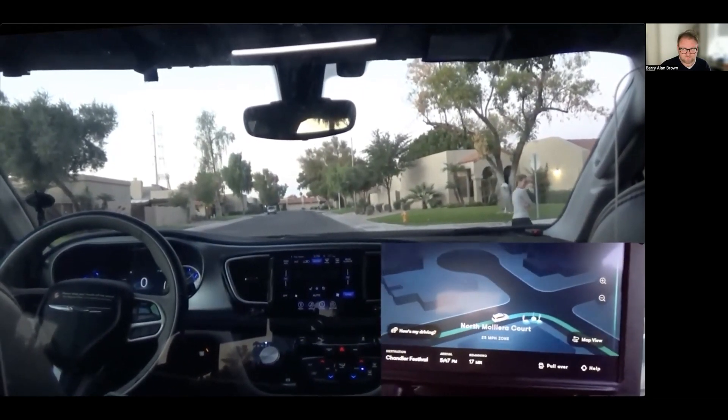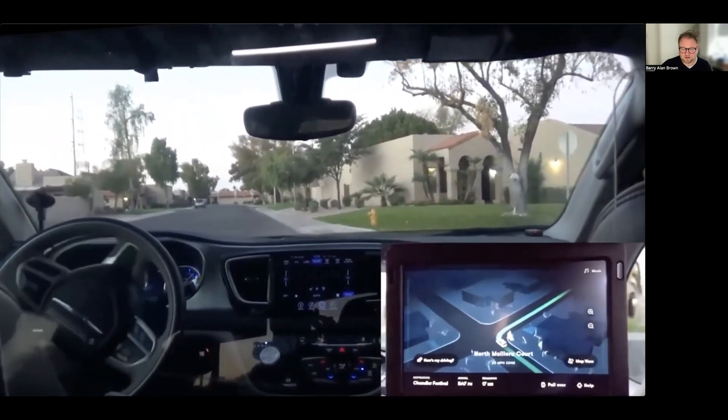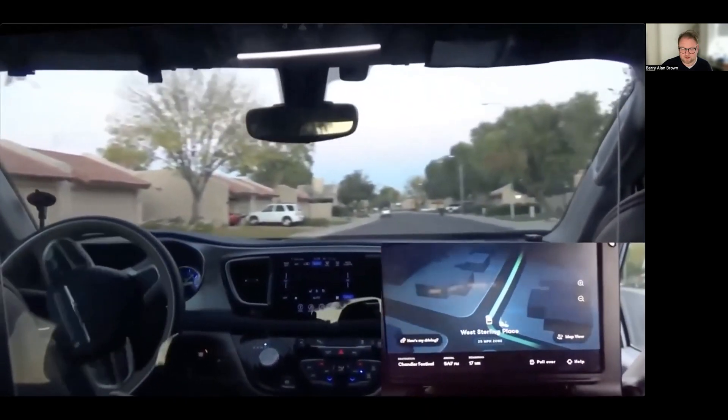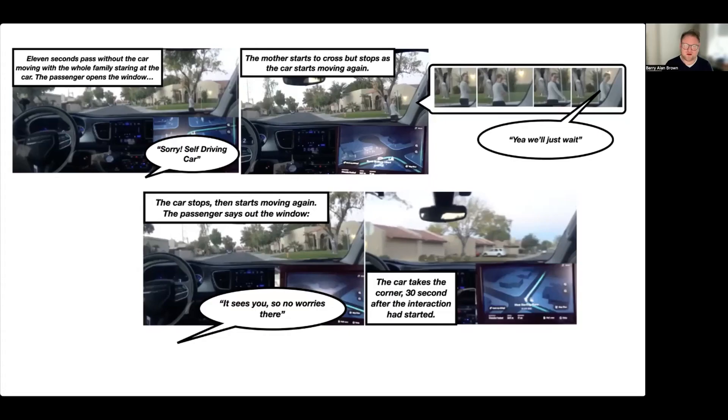Sorry self-driving car! So while the car does finally make it around the junction and it's not perhaps unsafe, it's certainly a slightly frustrating interaction, and indeed the passenger in the back has to apologize for the self-driving car's behavior. The problem that we get here is you get this little standoff where the family moved across the road and then the car moves, they then get back on the pavement, the car then stops, and you get this little standoff that you actually often see quite commonly with these self-driving vehicles.